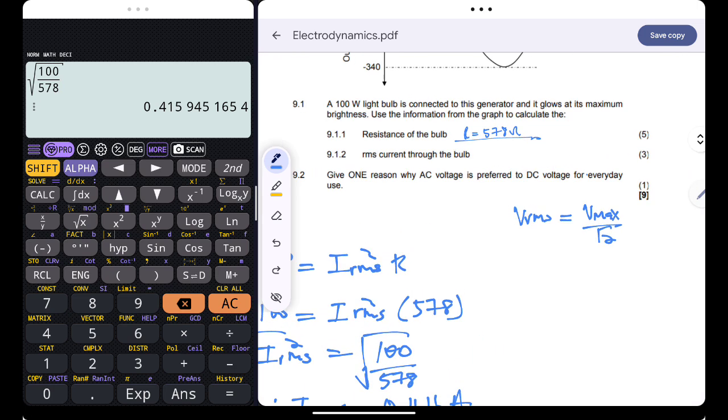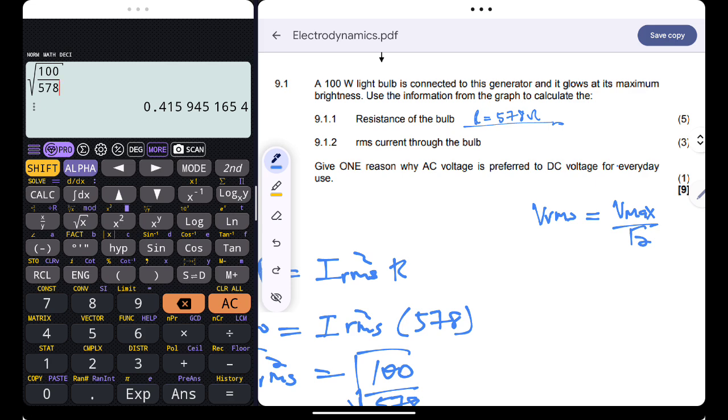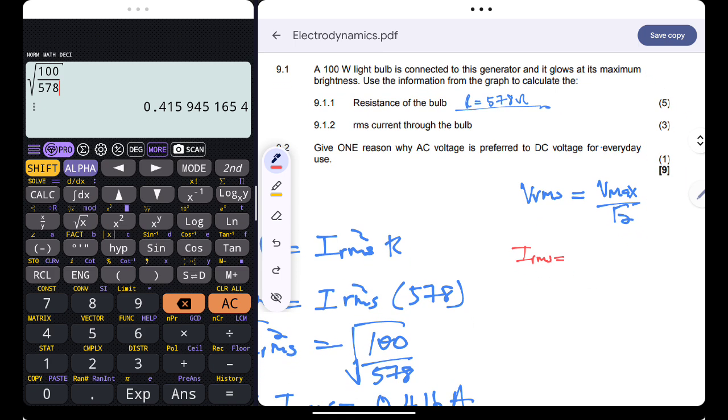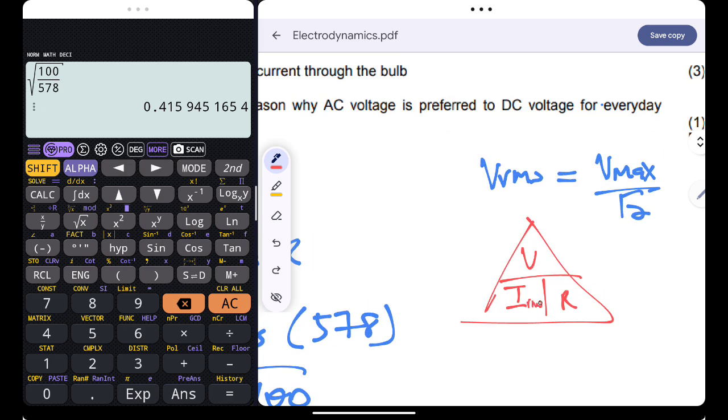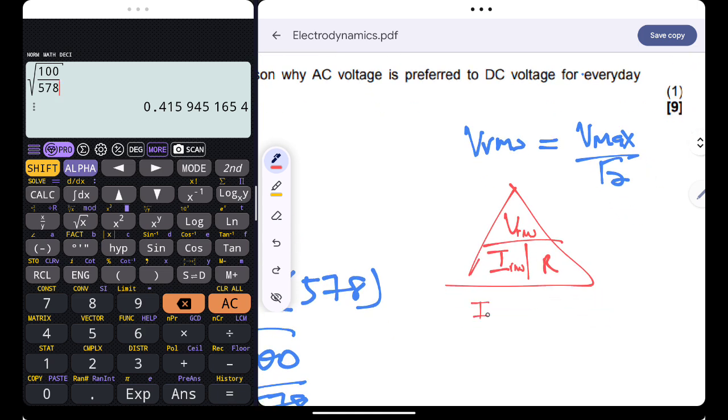The amino is that you could have found the current, you could have said I_rms is basically equal to... Let me remind you, your Ohm's law equation. V is equal to I over R, so same thing applies. I_rms is equal to V_rms all over R.